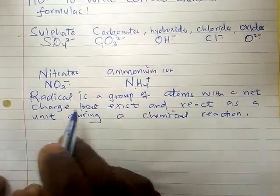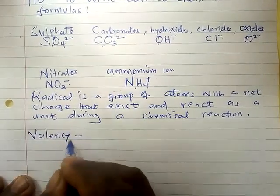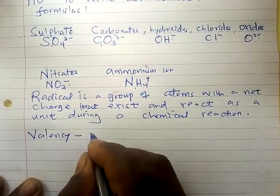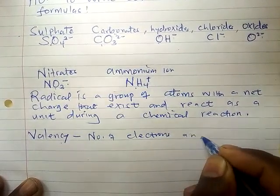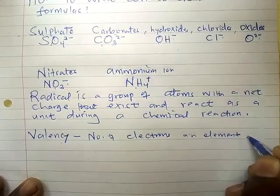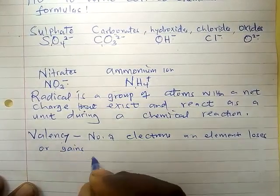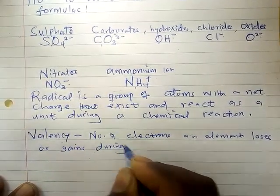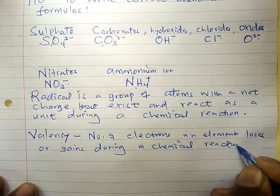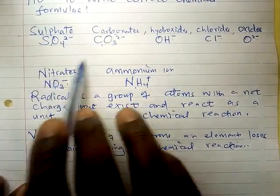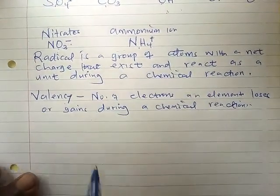The basic thing you must know is the valency. Valency is the number of electrons an element loses or gains during a chemical reaction. For radicals, the charge is their valency. Now for atoms like sodium, what is the valency of sodium?